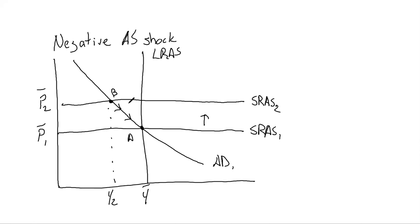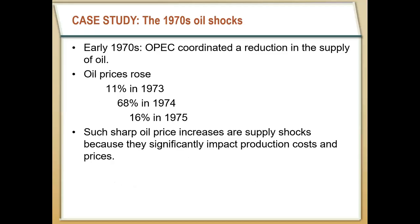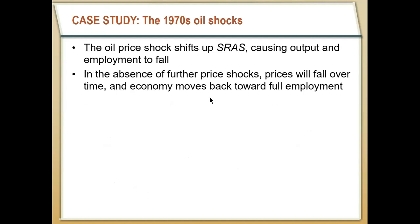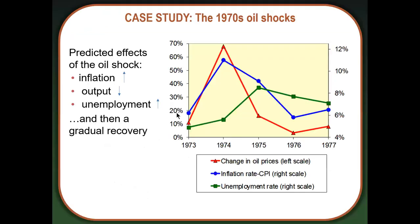The predictions of this model are that we should have inflation in the short run, but over the long run it shouldn't have very significant effects. We can take this and look at U.S. data from the 1970s to see if these predictions held. The oil shock caused the shift upward in the short-run aggregate supply curve, but without future supply shocks, prices were going to have to fall over time to bring us back to full employment at Y bar. And indeed in the 1970s, oil prices skyrocketed and almost doubled in that three-year span.